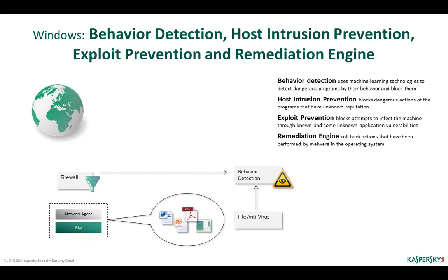The file, web, and mail threat protection components provide static protection for a device — they scan objects before they run and block the start and download of dangerous objects. The behavior detection, exploit prevention, and rollback components provide dynamic protection — they monitor object actions, analyze, detect, and block dangerous behavior. The components and technologies that help counter new malware not yet added to signature databases, or minimize their impact, are called proactive defense.